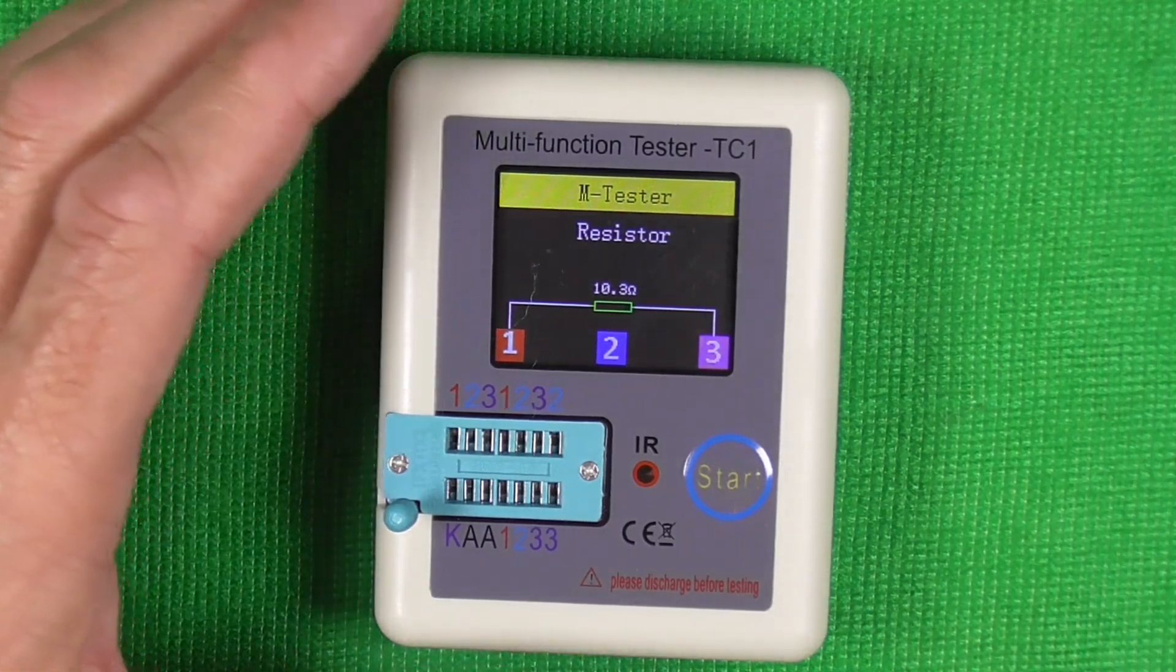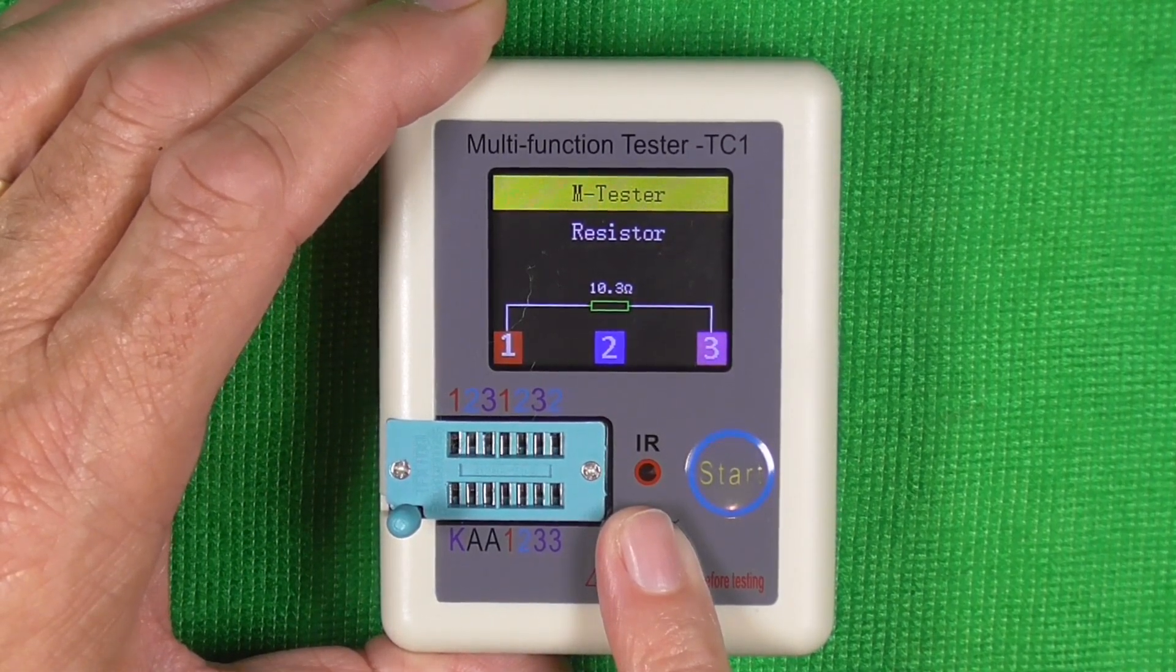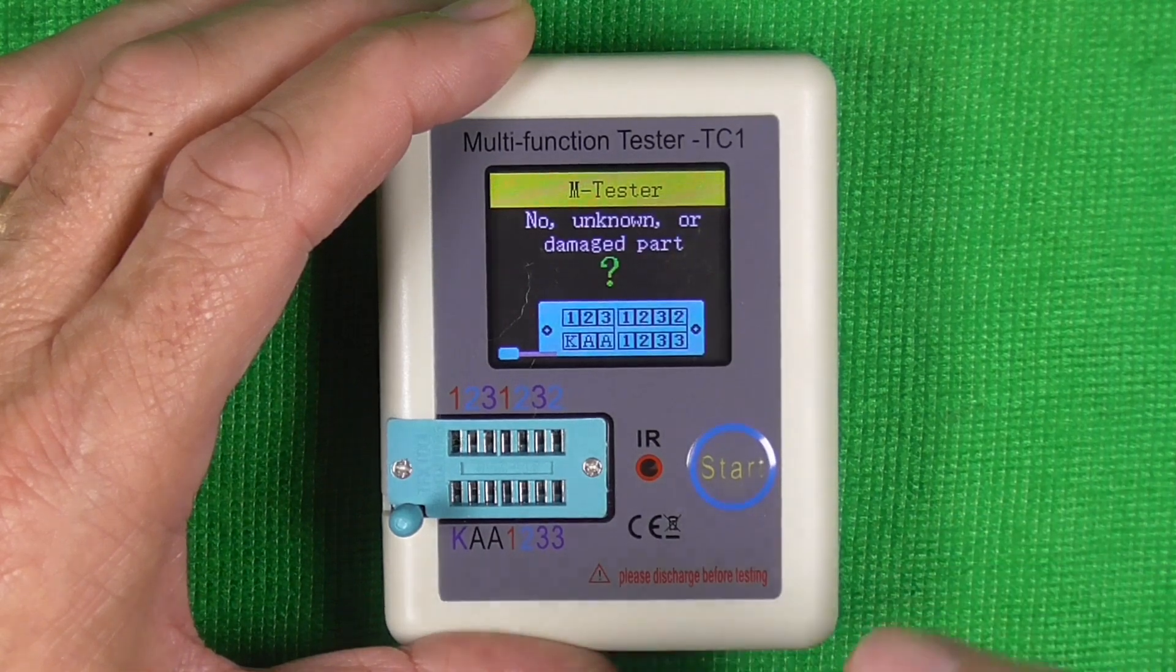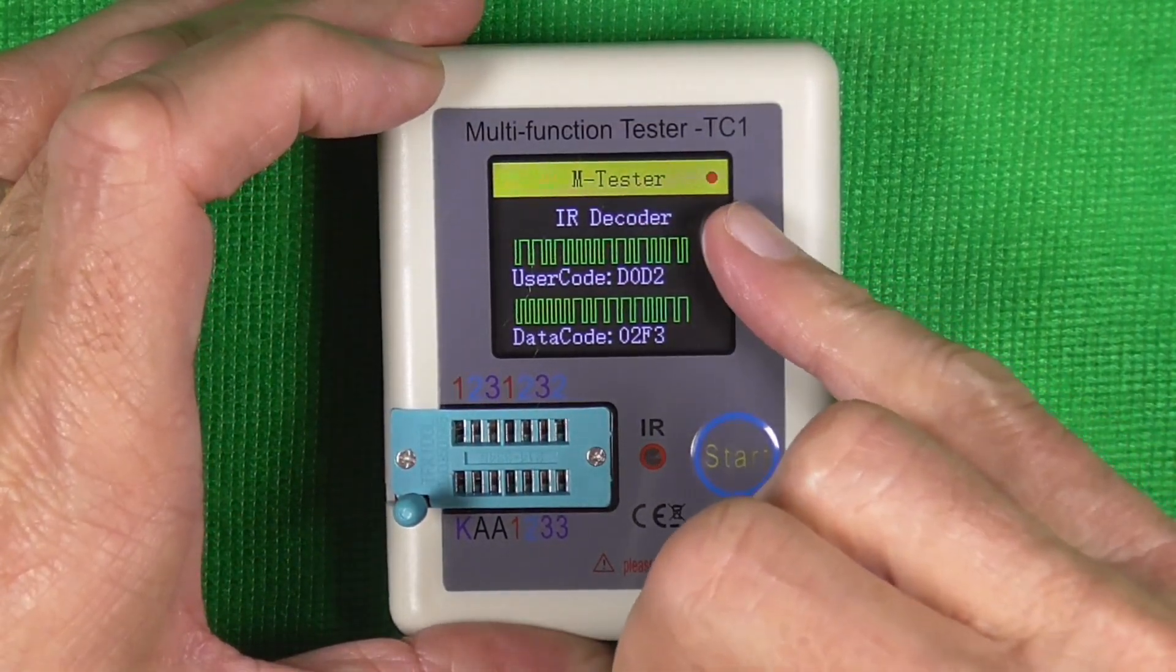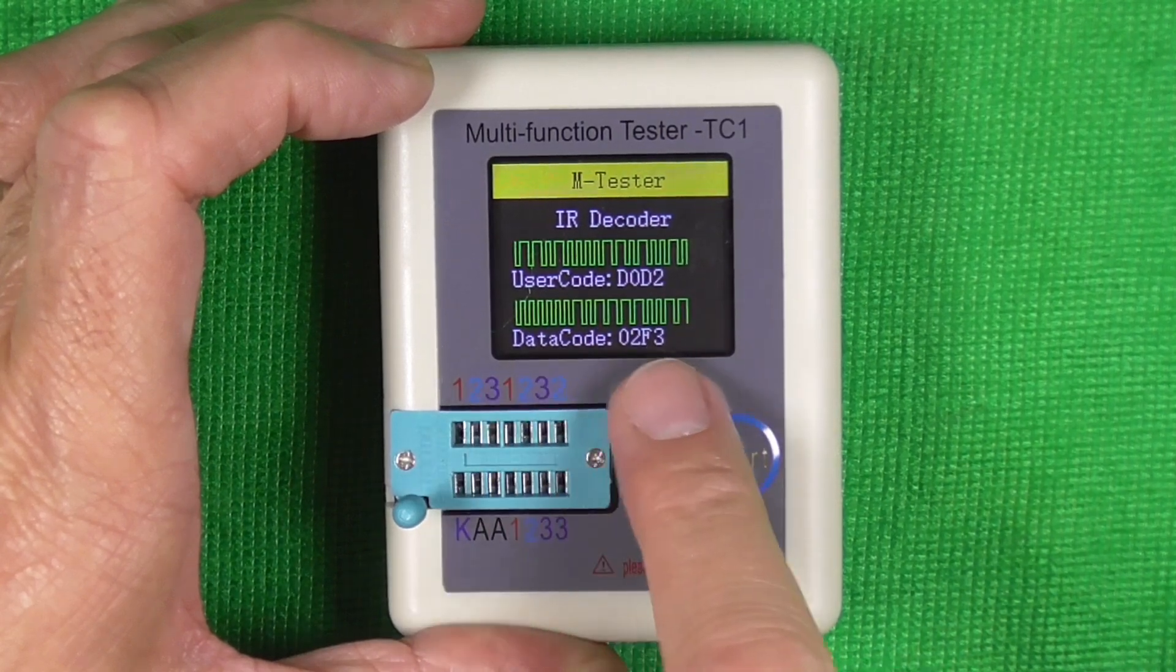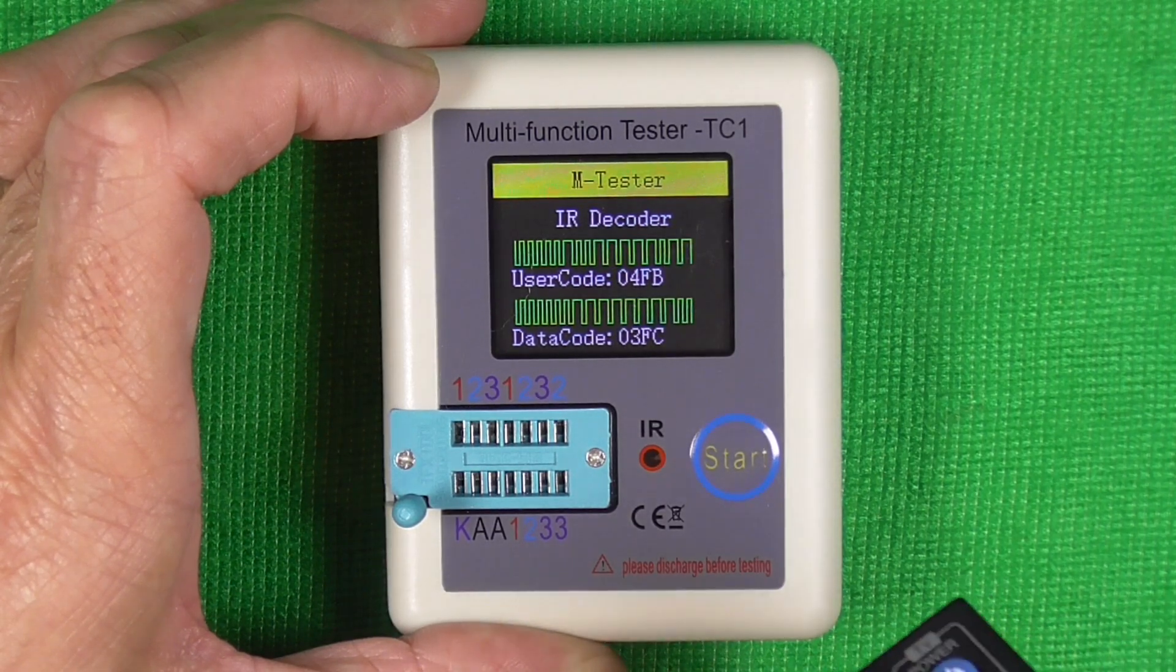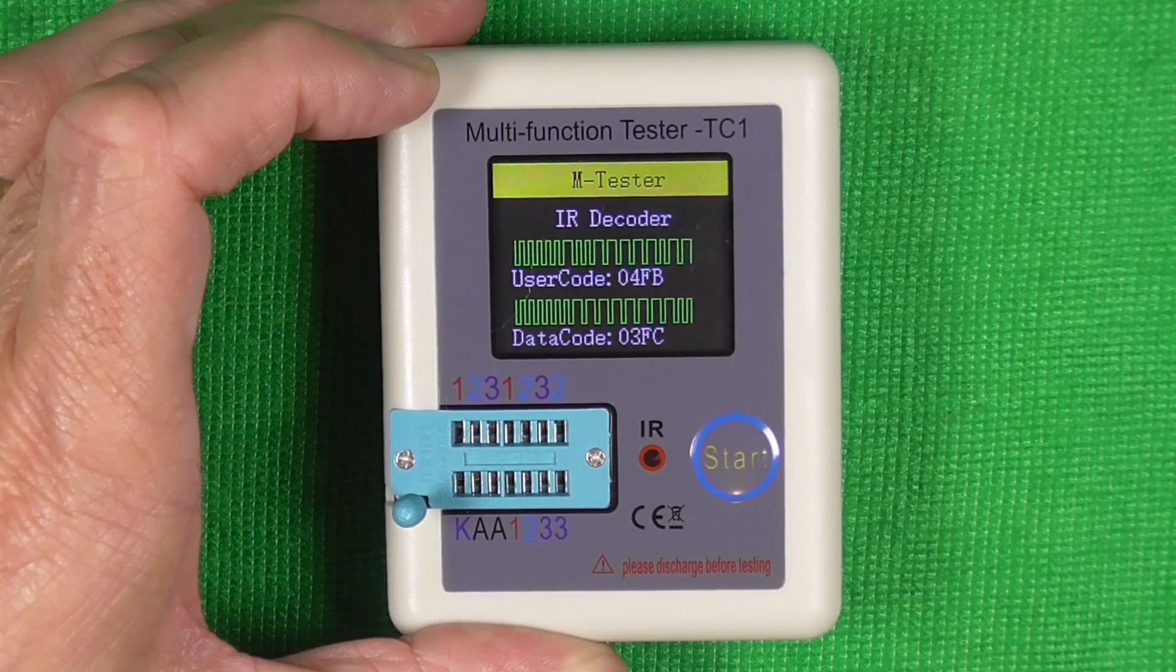Now the other thing this will do is test remote controls. There's a little IR sensor. So if we point a remote at it—wait a minute, let it start it up again. Give it a minute. There we go. Point this at it. You'll see that the little LED indicator there flashing. And it gives us the codes here. They should change depending on what button I pressed. How you can put that to use, at this point I'm not sure, but that's the component tester.